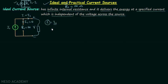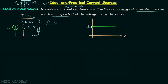When we plot the variation of current I with voltage V, current I always equals IS regardless of the voltage across the source. We can keep increasing the voltage and current I remains constant. Any voltage can appear across the terminals without affecting the current drawn from the source. This is all for the ideal current source.